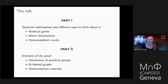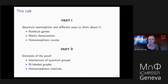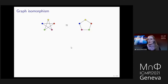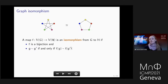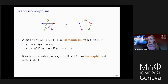My plan for today: I will start by defining what quantum isomorphism is and give you different ways to think about it, including this combinatorial characterization. Then in the second part, time permitting, I will give you a glimpse into the proof. Let's first start with the classical concept. Two graphs are isomorphic intuitively if they're just the same graph. More formally, we need an isomorphism map — a bijection F that takes vertices of G to vertices of H and preserves the structure of the graph, meaning it preserves both adjacency and non-adjacency. Whenever such a map exists, we say the two graphs are isomorphic.